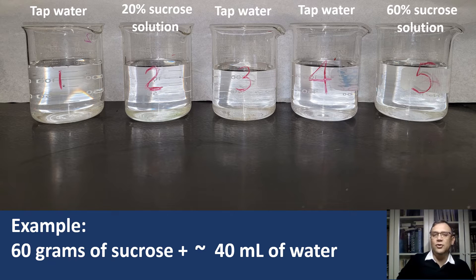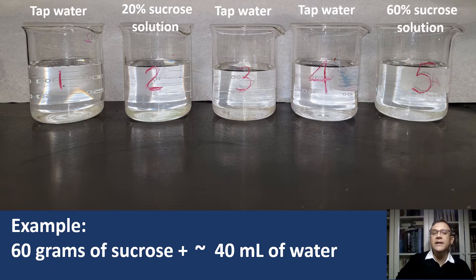By analogy, to make 60% sucrose solution, I dissolved sucrose in water so the final solution contains 60 grams of sucrose for every 100 ml of solution. The key is to dissolve sucrose first and then carefully add water until the total solution reaches the desired volume of 100 ml.